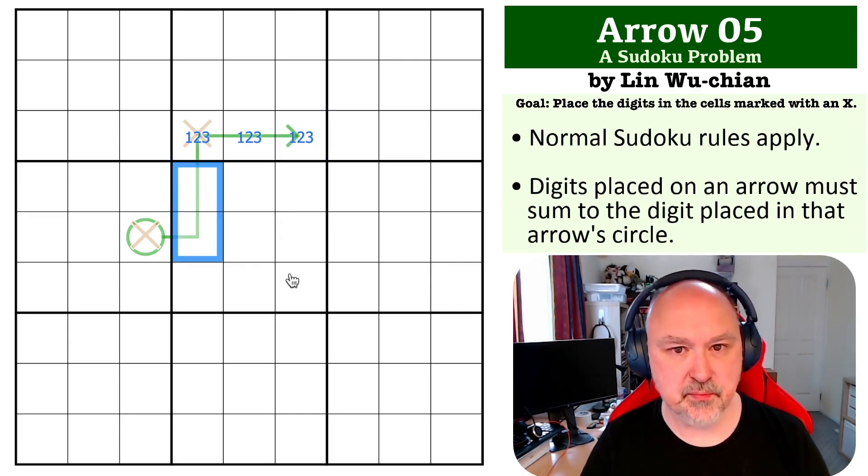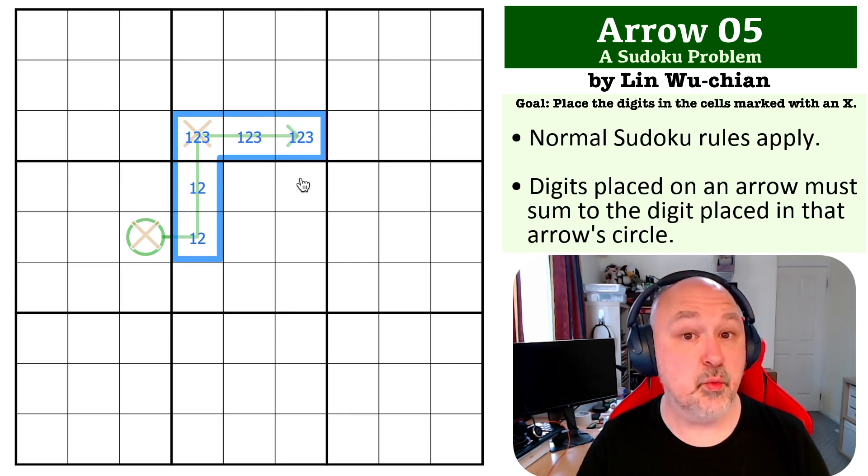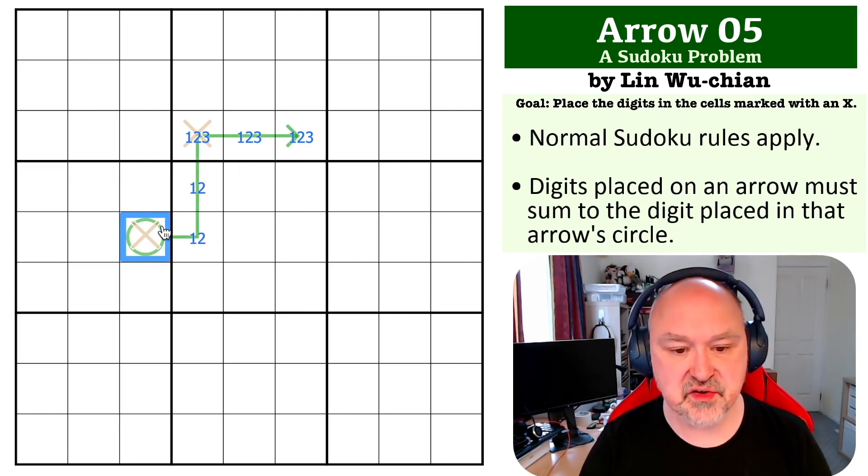This is two cells in the same box. The minimum of those is 1 and 2. So this has a minimum of 6, this has a minimum of 3. If you add those together, you get 9, which is the maximum Sudoku digit. So this becomes a 9.